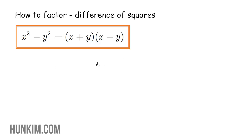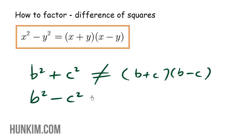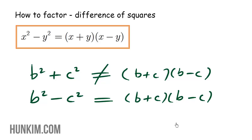Now I want to show you a common error and a very cruel trick. If I ask you to factor b squared plus c squared, you may be tempted to write (b plus c)(b minus c) — but this is not equal. It has to be a minus sign for this to work. So if it were b squared minus c squared, then you write your brackets: b times b is b squared, plus and minus, and the square root of c squared is c. That is correct.